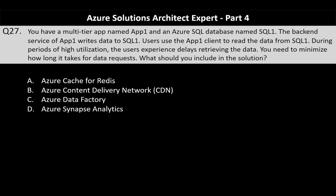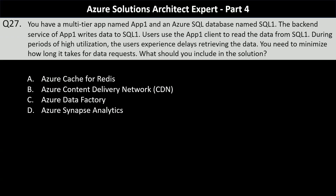The options are Azure Cache for Redis, Azure Content Delivery Network, Azure Data Factory, and Azure Synapse Analytics. To minimize delays in retrieving data during periods of high utilization, the best solution is Azure Cache for Redis, because it stores frequently accessed data in memory, allowing for faster data retrieval compared to querying the database every time. It is ideal for improving application performance by reducing latency and offloading the backend database during high utilization periods.